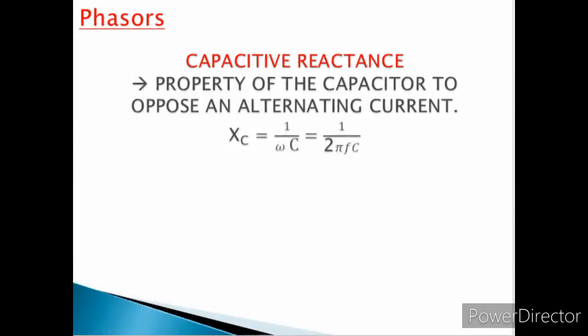Let us define first what is capacitive reactance. It is a property of the capacitor to oppose an alternating current. It is denoted by X sub C, which is equal to one over omega C, or one over two pi f C.